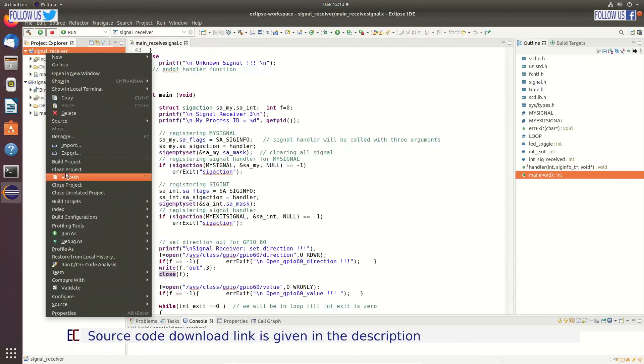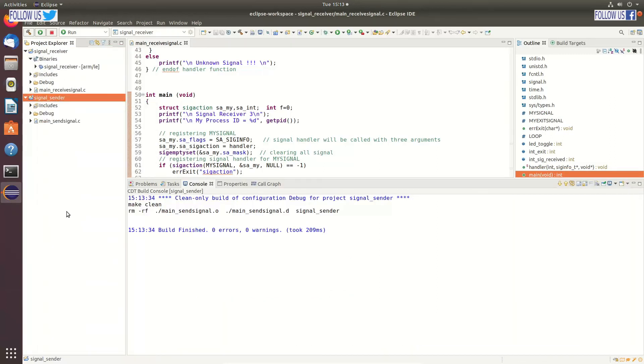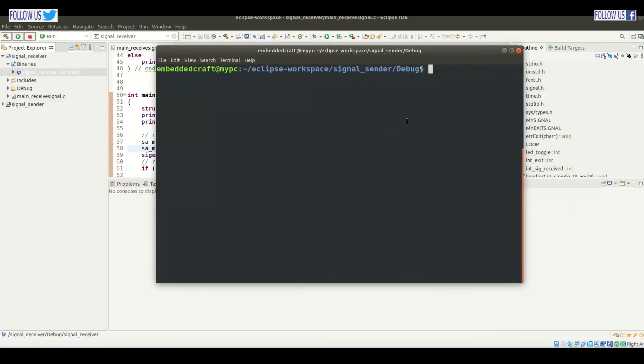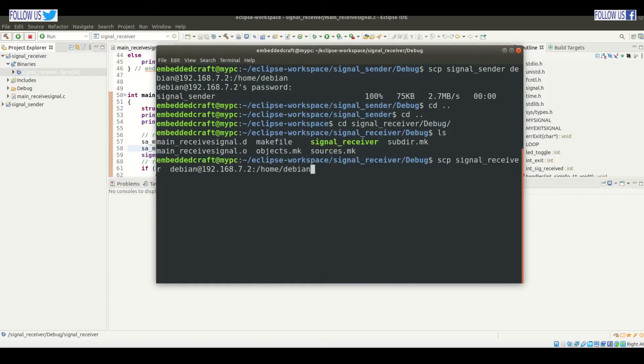We are now building these two projects. Now we are ready to run these programs on our board. First we have to transfer files to board. We are using scp command. Typing scp, space, file name, user name at the rate of board IP address and path on board. File is transferred.